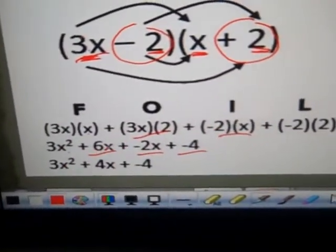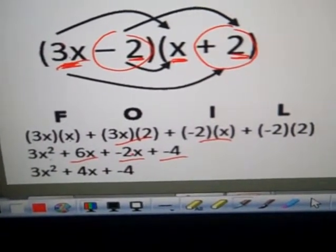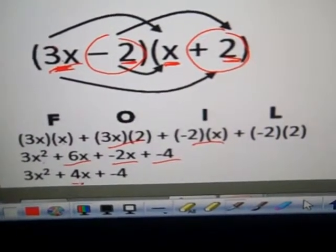And afterwards you can clean this up by combining like terms. 6x and negative 2x can give you 4x.